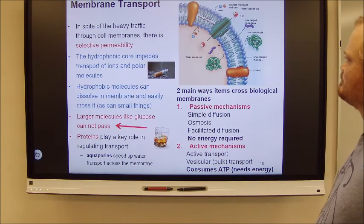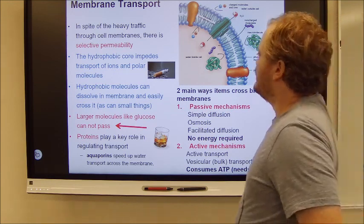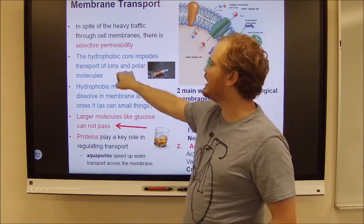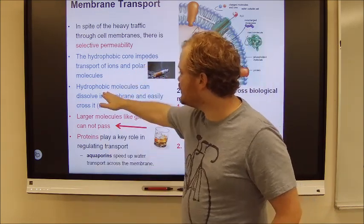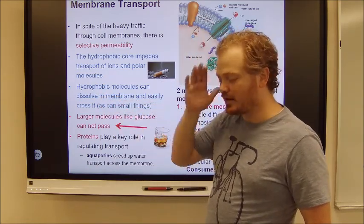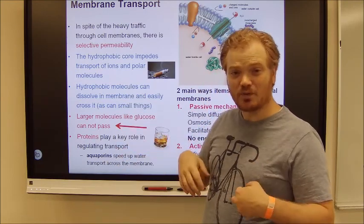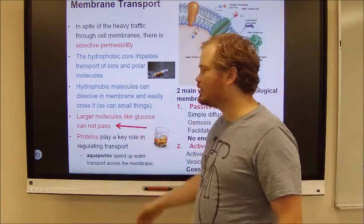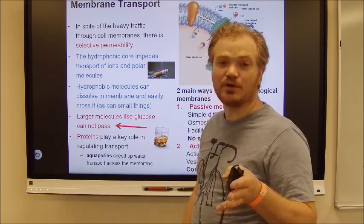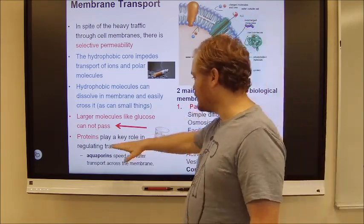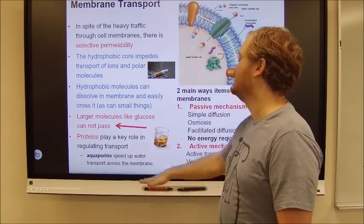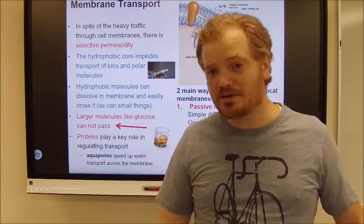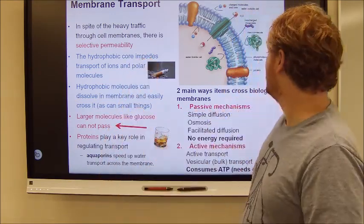Membrane transport. Membranes are selectively permeable. The hydrophobic core does indeed impede the movements of ions and polar molecules. In other words, hydrophobic molecules, like non-polar molecules, tend to be able to get through easily, whereas polar molecules tend to struggle. Big things like glucose do not pass readily. They have to have helper proteins to help get them across because glucose is so big. Proteins play a key role in regulating all of this, like the aquaporins in your red blood cells that allow for the exchange of ions internally and water molecules to help maintain osmotic balance.